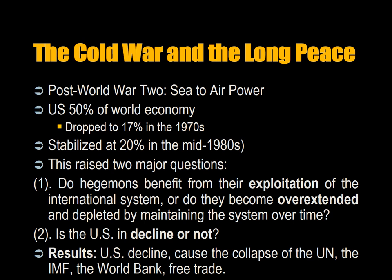Now we have the Cold War and the Long Peace — the Cold War is not a general war. After the Second World War, air power replaced naval power as the key to controlling the oceans. At the end of World War II, the US had over 50% of the world's productive capability. This dropped to 17% in the 1970s, and stabilized around 20% by the mid-1980s as a result of the reforms of Ronald Reagan. Most of the hegemonic stability literature comes about in the 1970s with the decline of the US and concerns about what this would have for the world order, since many institutions like the United Nations were dependent on US power.